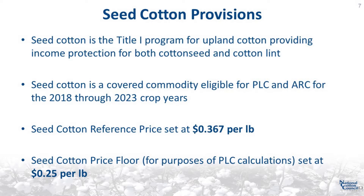The seed cotton provisions effective for the 2018 crop year remain unchanged in the 2018 Farm Bill. Seed cotton is the Title I program for upland cotton providing income protection for both cotton seed and cotton lint. Under the 2018 Farm Bill, seed cotton is a covered commodity eligible for PLC and ARC for the 2019 through 2023 crop years. The seed cotton reference price is 36.7 cents per pound. The seed cotton price floor, for the purposes of PLC calculations, is 25 cents per pound.